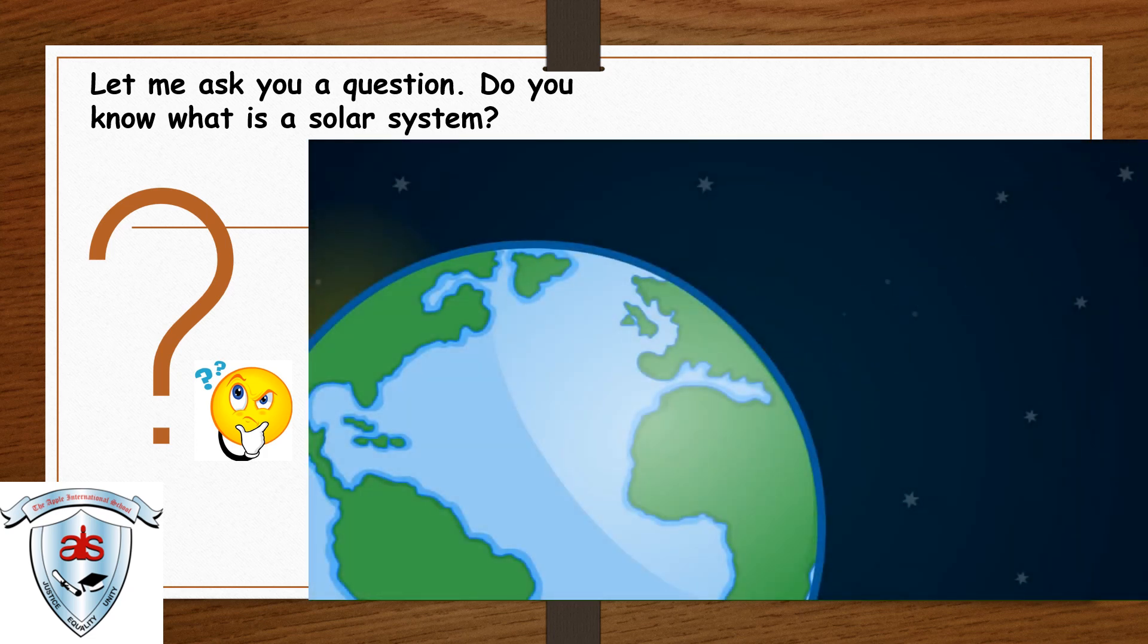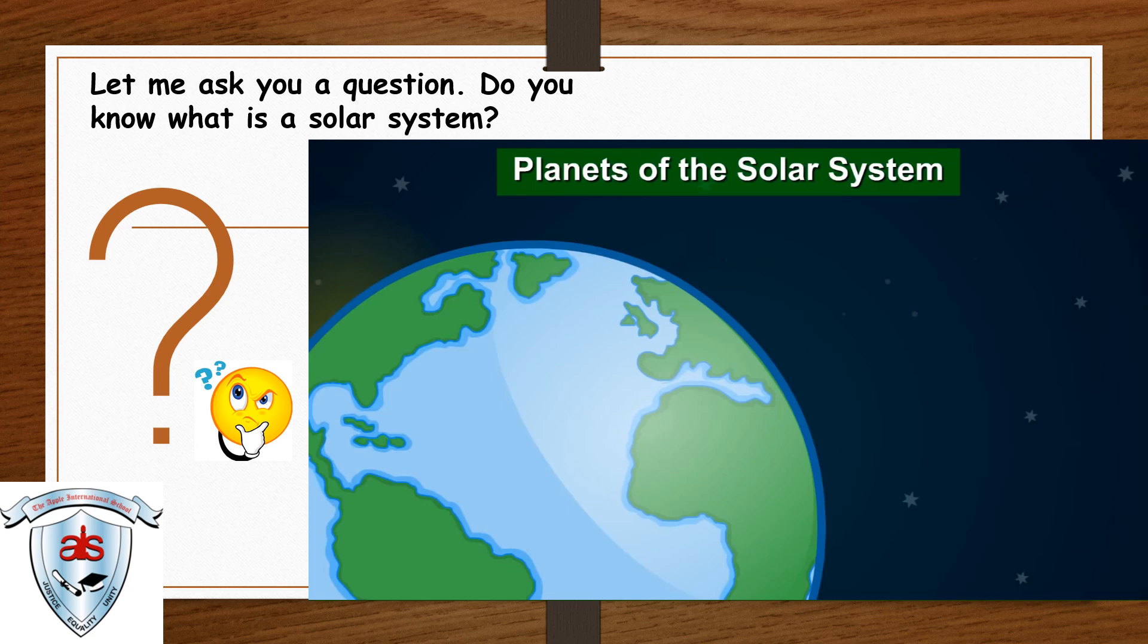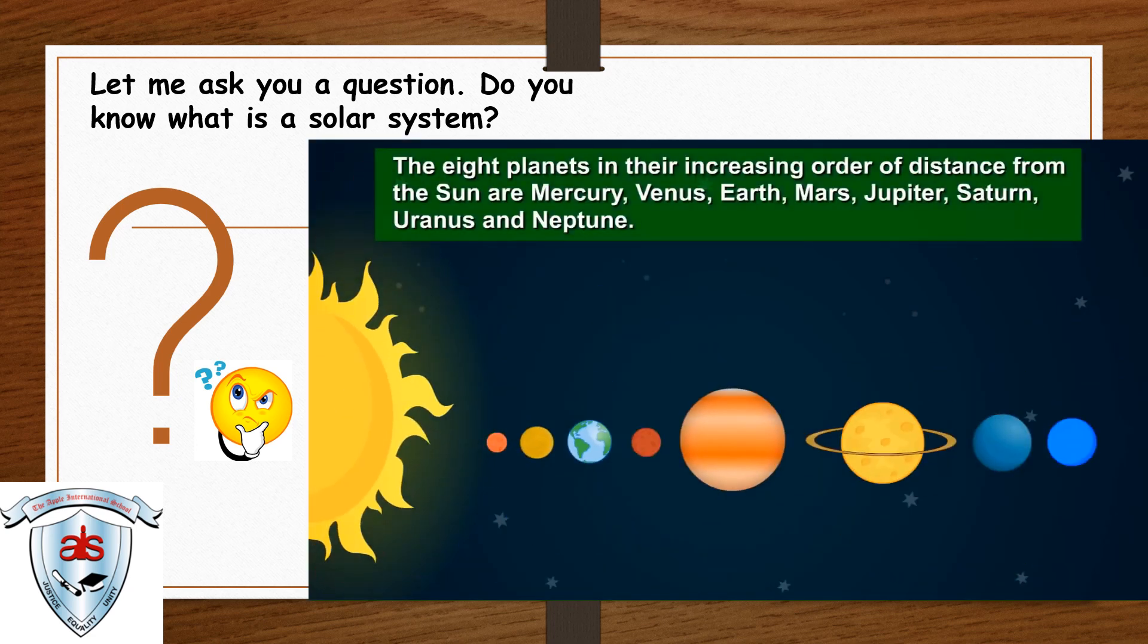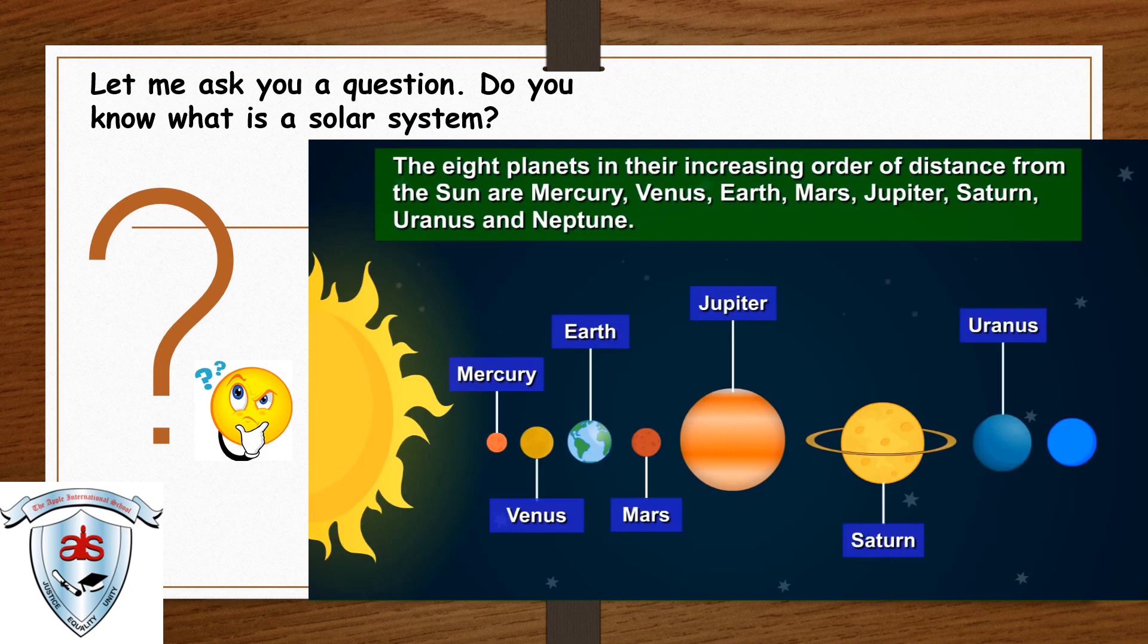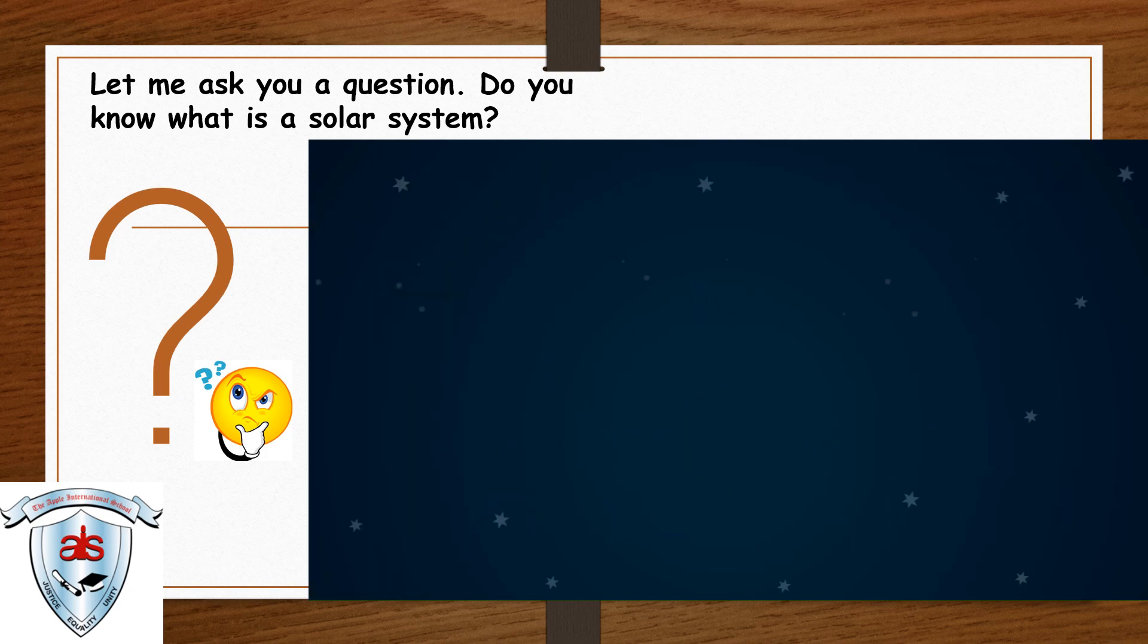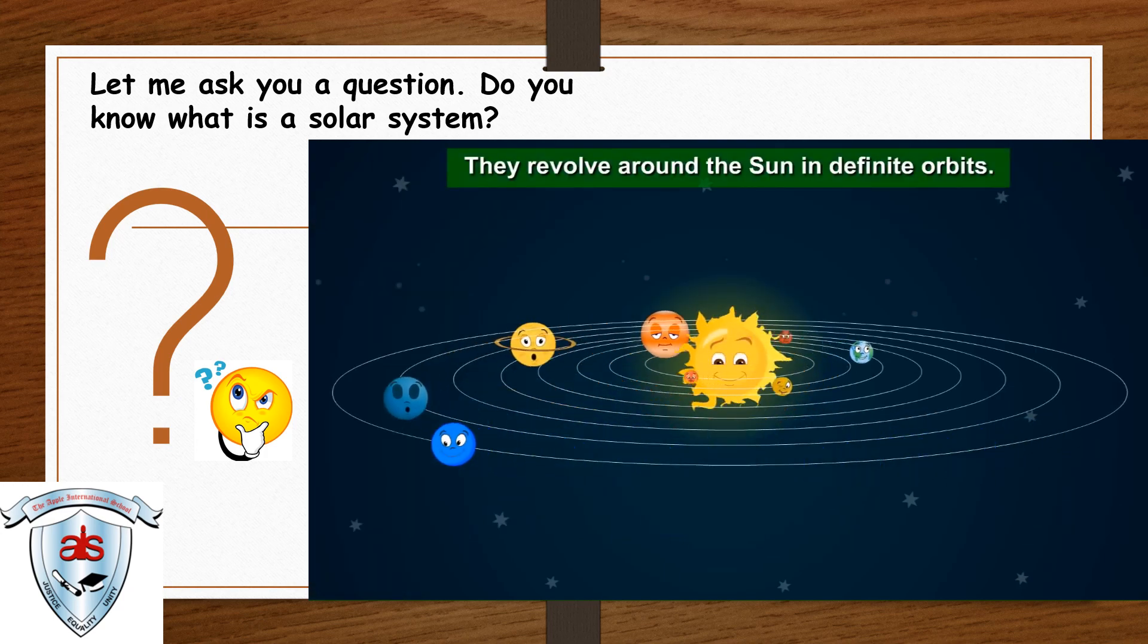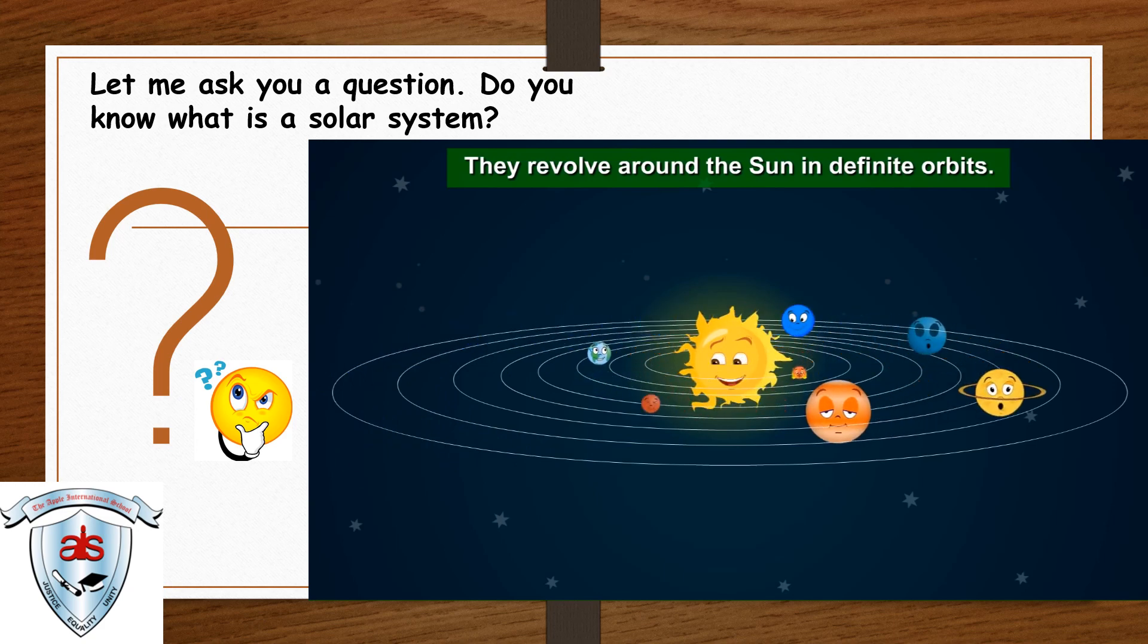Our topic for today is Planets of the Solar System. The eight planets in their increasing order of distance from the sun are Mercury, Venus, Earth, Mars, Jupiter, Saturn, Uranus, and Neptune. They revolve around the sun in definite orbits.